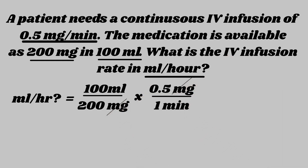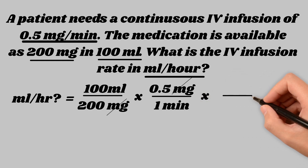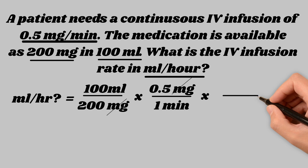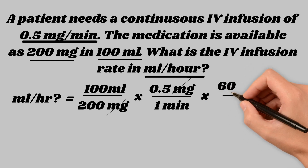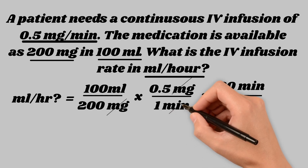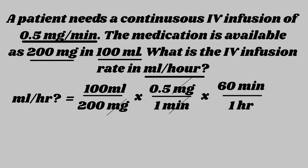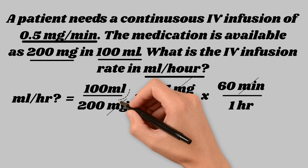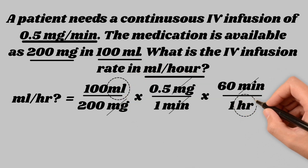But that's not what we're looking for — we need mLs per hour. So now we have our mLs, but we need to convert minutes to hours. Since minutes are on the bottom, we put minutes on top to cancel, and hours on the bottom. There are 60 minutes in one hour, so we can fill those in. We cancel out our minutes, and what we're left with is mLs per hour. After calculation, our final answer is 15 mLs per hour.